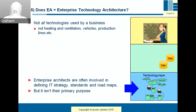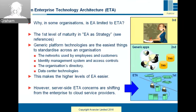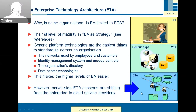Does EA equal enterprise technology architecture? There's a school of thought that only sees EA as being about information technologies. It's true that enterprise architects are often involved in defining IT strategies, standards, and roadmaps, but that isn't really their primary purpose. In some organizations, EA is limited to that domain, and there's a rationale: it's the first level of maturity in EA strategy. Generic platform technologies are the easiest things to standardize, and once you've done that, it makes the higher levels of EA easier. Ross, Weill, and Robertson suggested the first maturity level is technology, then data and applications, then business roles and processes.